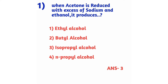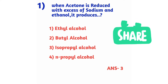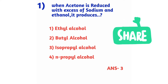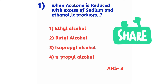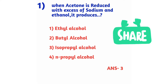Question number 1: When acetone is reduced with excess of sodium and ethanol, it produces — option 1: ethyl alcohol, option 2: butyl alcohol, option 3: isopropyl alcohol, option 4: n-propyl alcohol. The right answer is option 3, isopropyl alcohol.